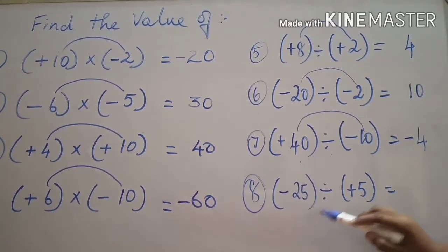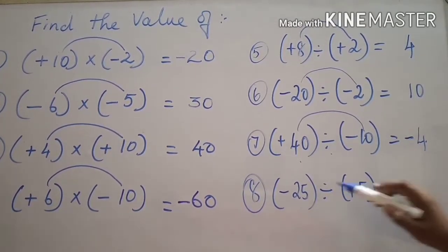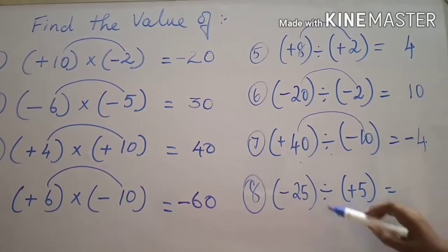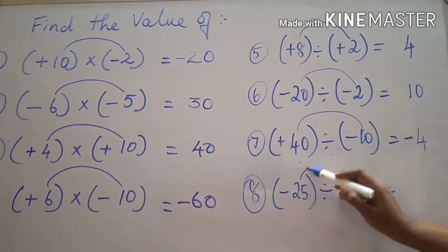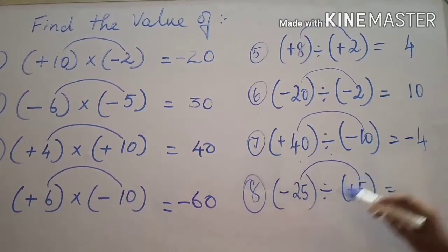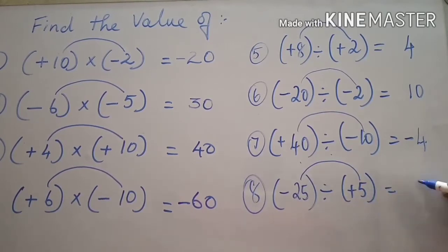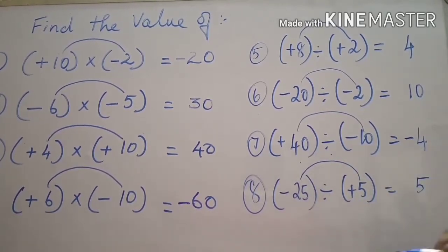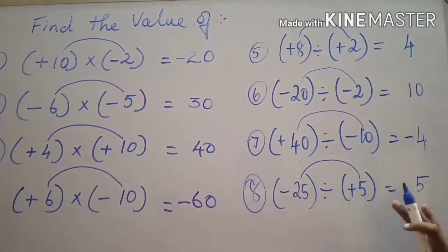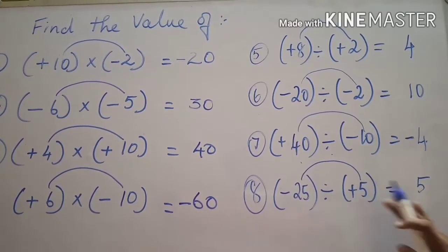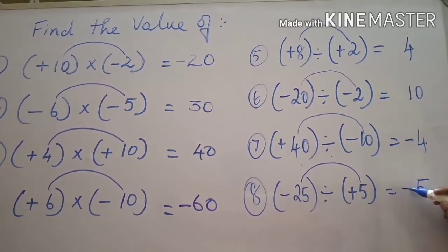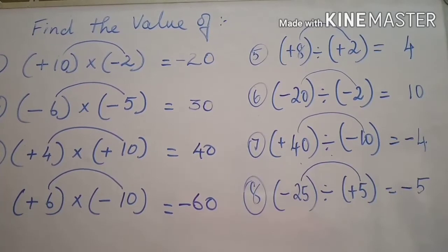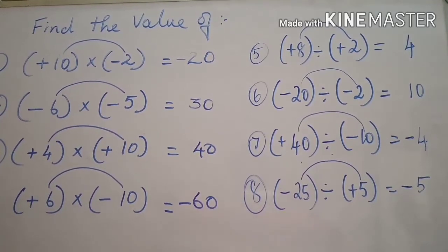Eighth sum: minus twenty-five divided by plus five. Divide the numbers — twenty-five divided by five is five. One is positive and another one is negative: different sign, so we put minus in the answer. The final answer is negative five.